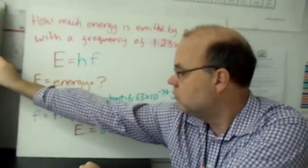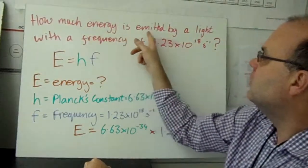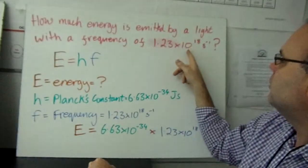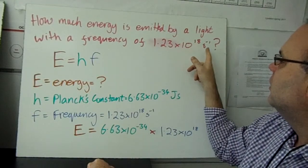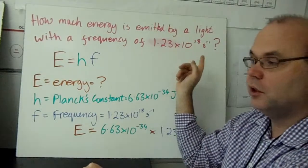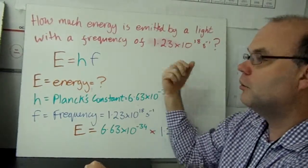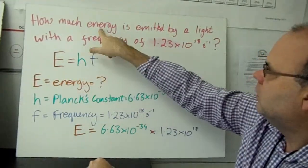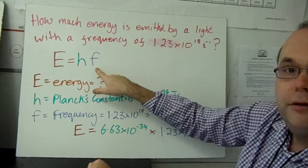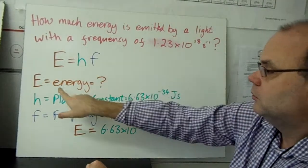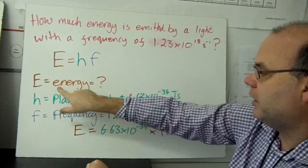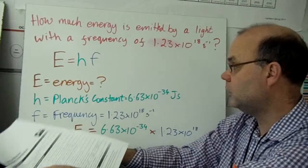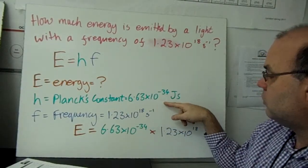Here's a question. How much energy is emitted by a light with a frequency of 1.23 times 10 to the 18 seconds to the minus 1? So that's a frequency. That's the sort of number you hopefully got last time. Energy, frequency. So our energy, E is energy. H is Planck's constant, which we can look up on our constants page, 6.63 times 10 to the minus 34.